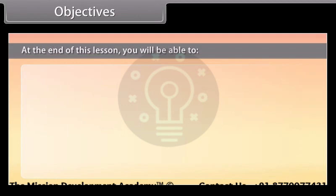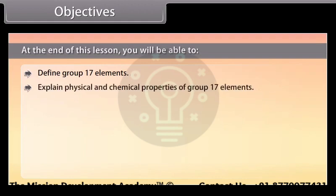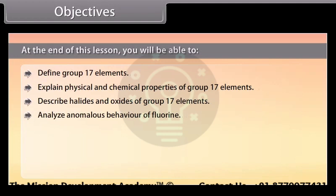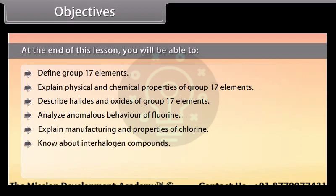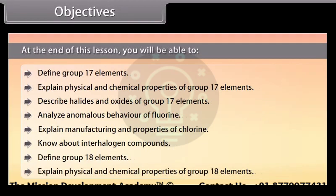Objectives: At the end of this lesson, you will be able to define group 17 elements, explain physical and chemical properties of group 17 elements, describe halides and oxides of group 17 elements, analyze anomalous behavior of fluorine, explain manufacturing and properties of chlorine, know about interhalogen compounds, define group 18 elements, and explain physical and chemical properties of group 18 elements.